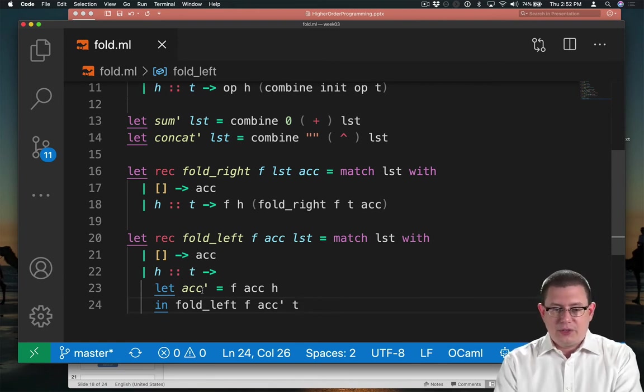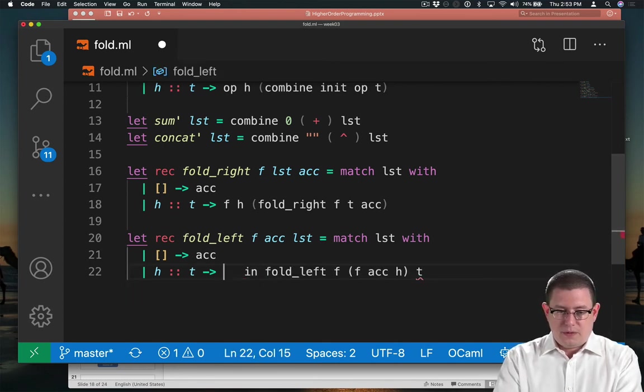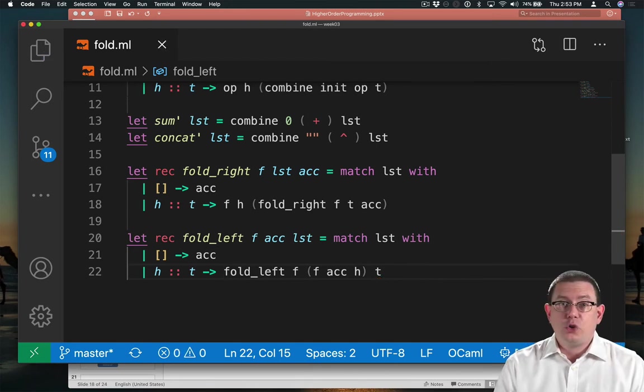Now, I didn't need to actually factor this out as acc prime here. I could replace it. And that gives us a little shorter of an implementation.